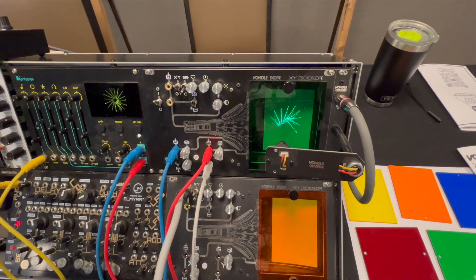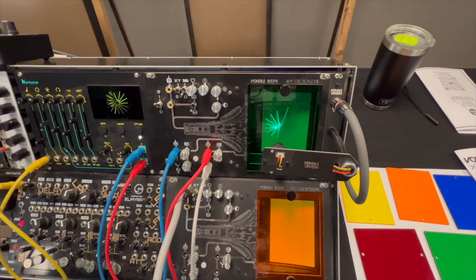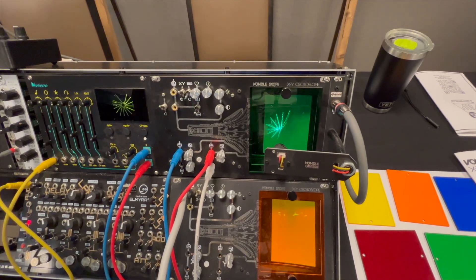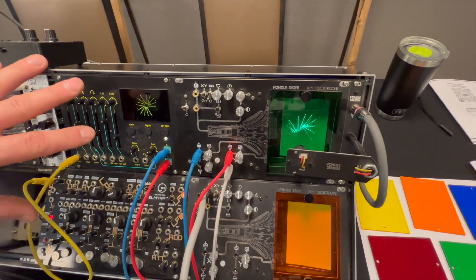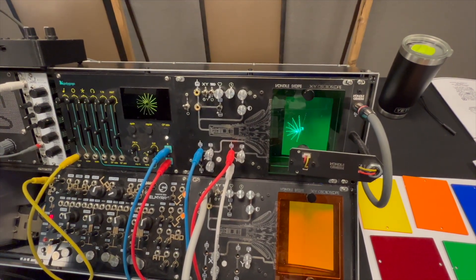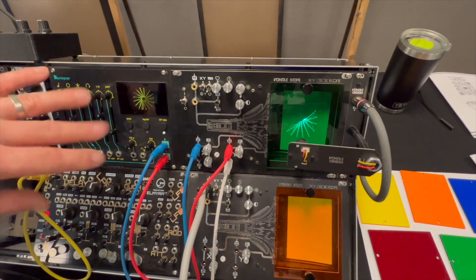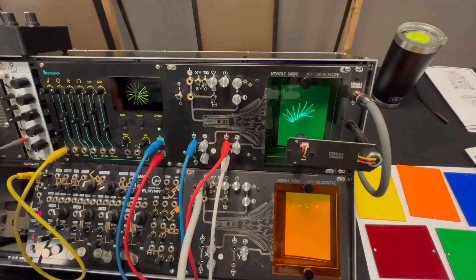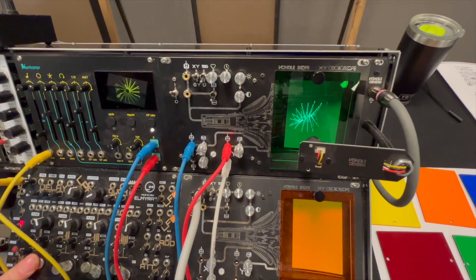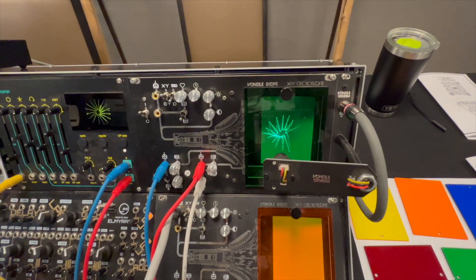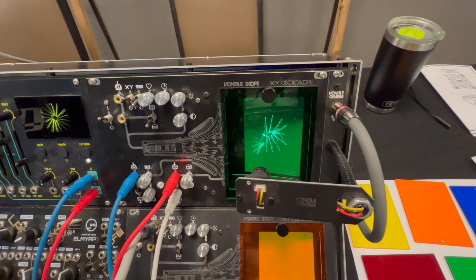Right now I've got this Polygogo where I'm sending audio signals through the X and the Y channels and we're able to see what that looks like. If you modulate that you can see the effect of different sounds and modulations through this visual means.